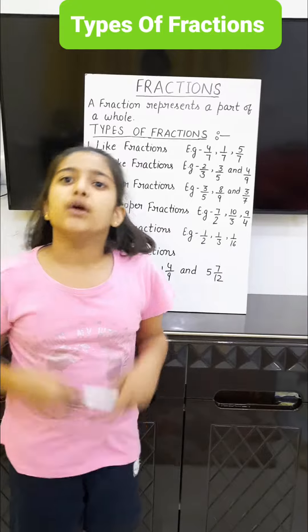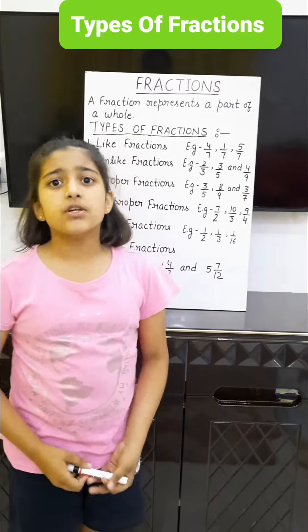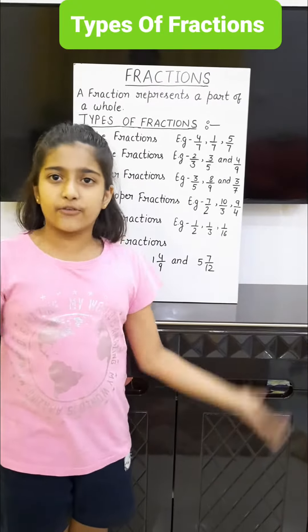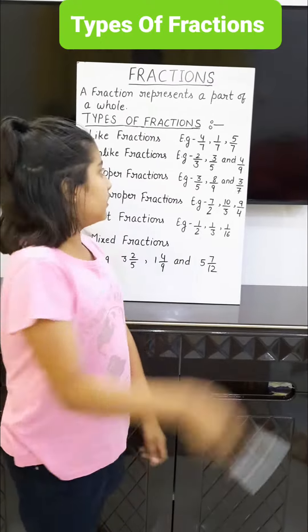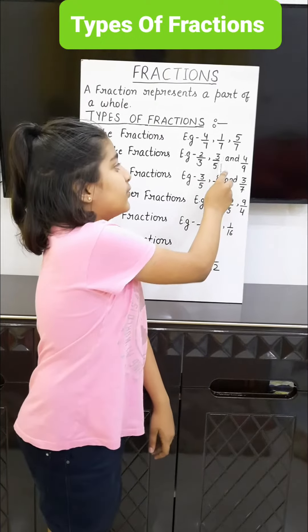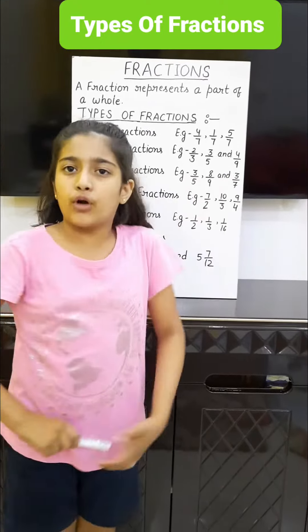Second, unlike fractions: fractions in which denominators are different. Example: 2/3, 3/5, and 4/9.